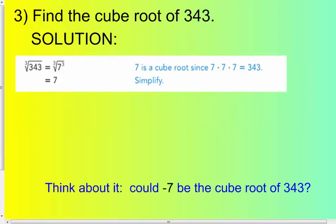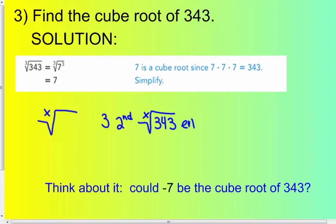Number 3: find the cube root of 343. You're looking for the number that, times itself 3 times, gives you 343. On your calculator, you'll use the cube root symbol — put the 3 in first, then press second, then the root symbol, and type in 343. Hit enter, and you get 7, because 7 times 7 times 7 is 343.